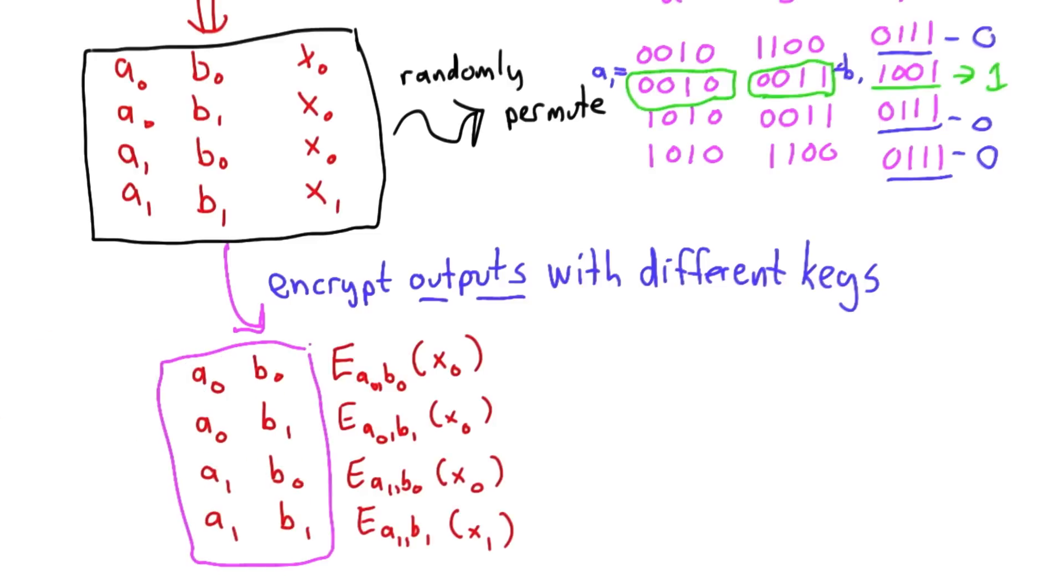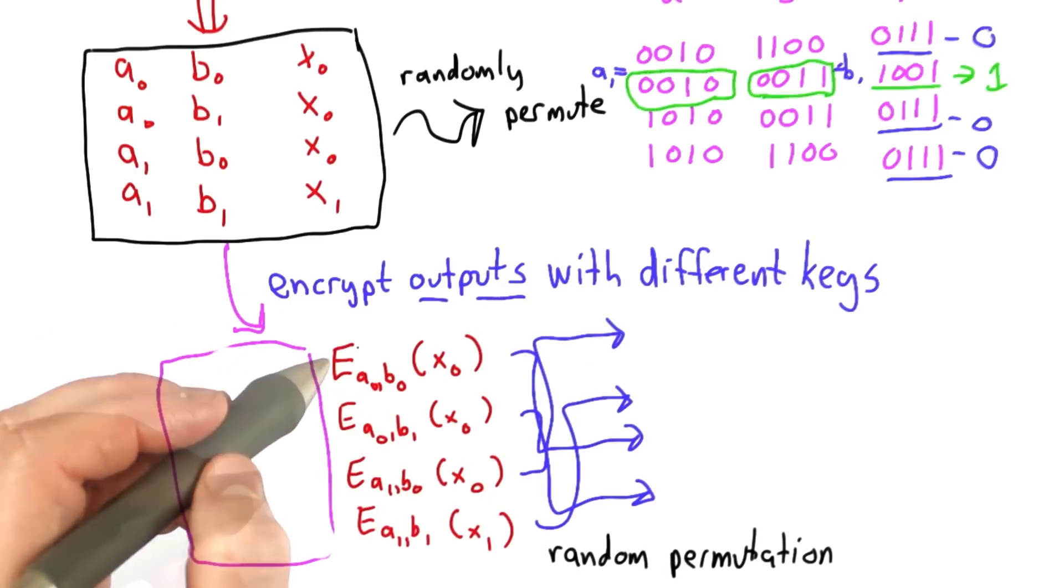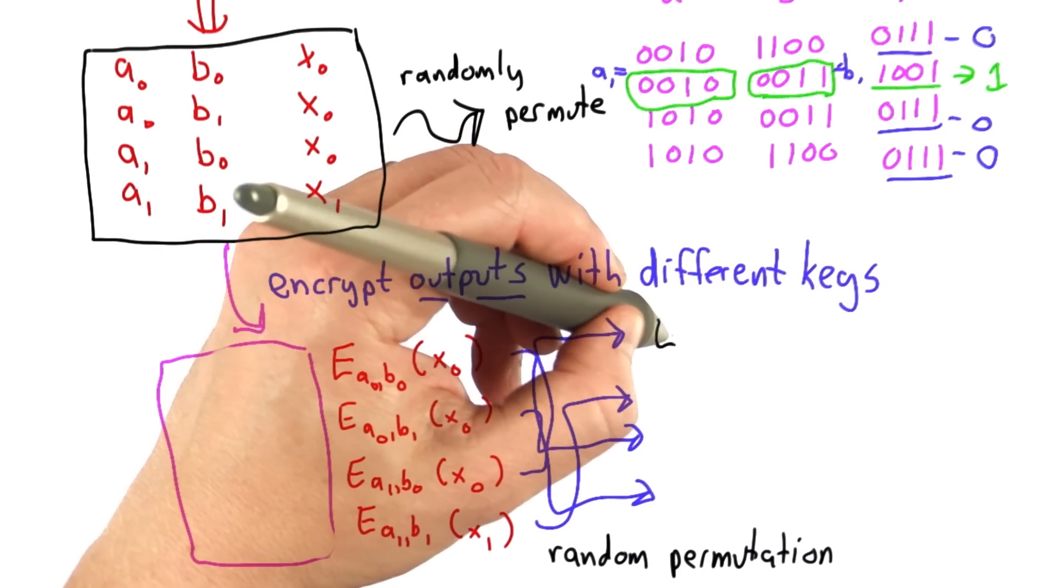So we need to remove this part of the table, and then we need to randomly permute the order of these entries. The other thing we'll do is add some padding. So that means after the garbling, we'll have a table that looks like this.